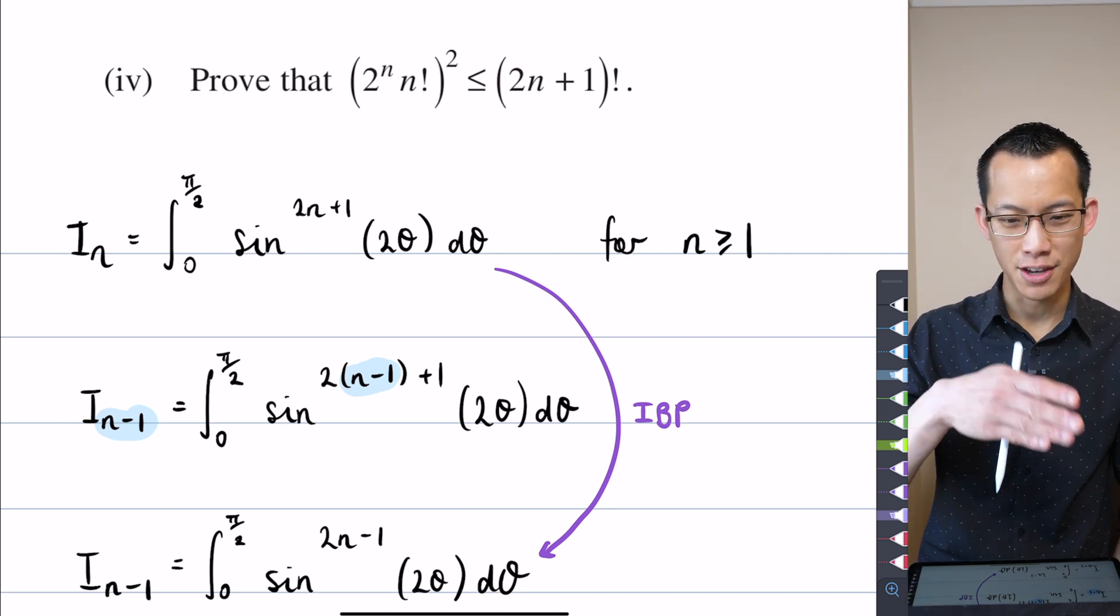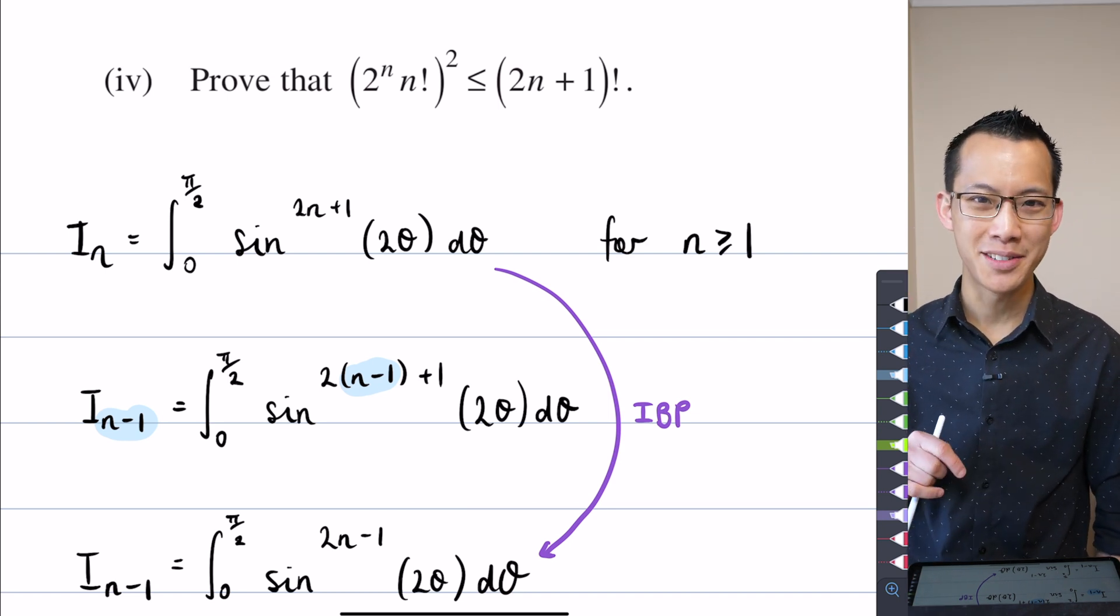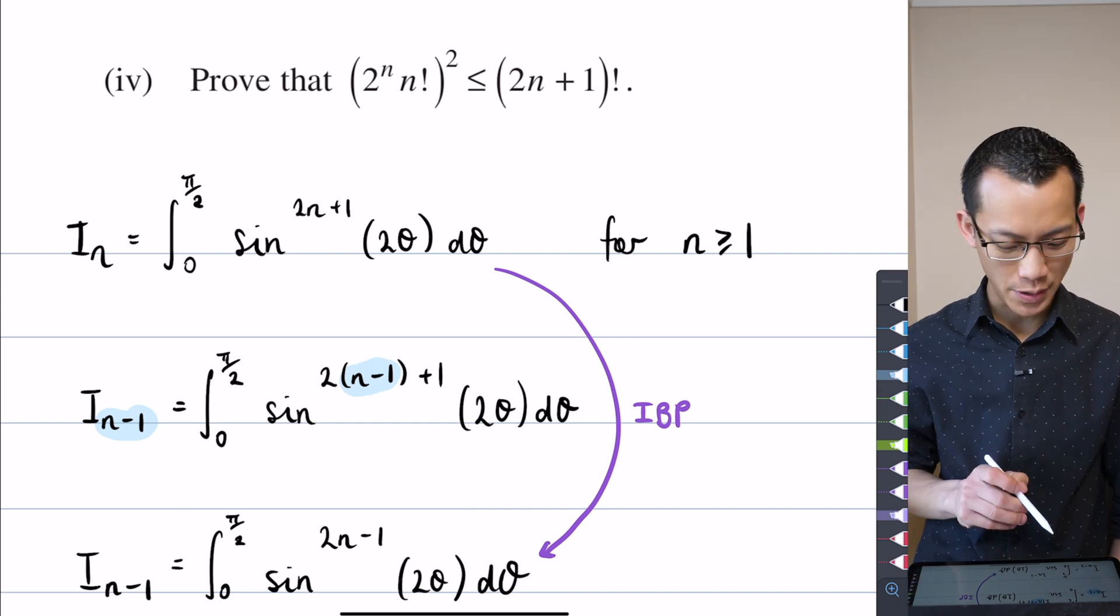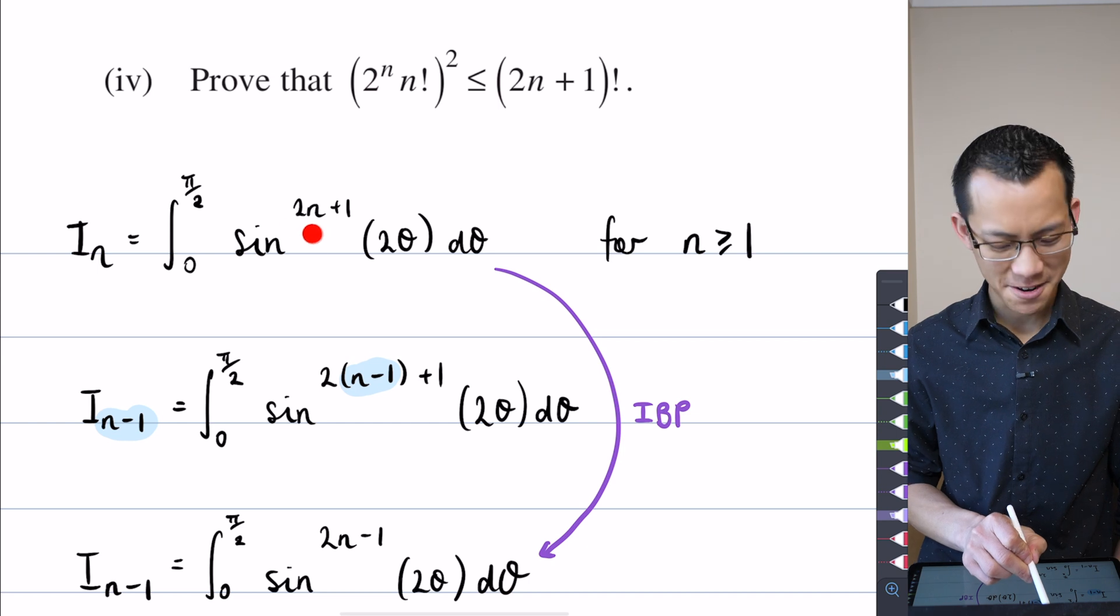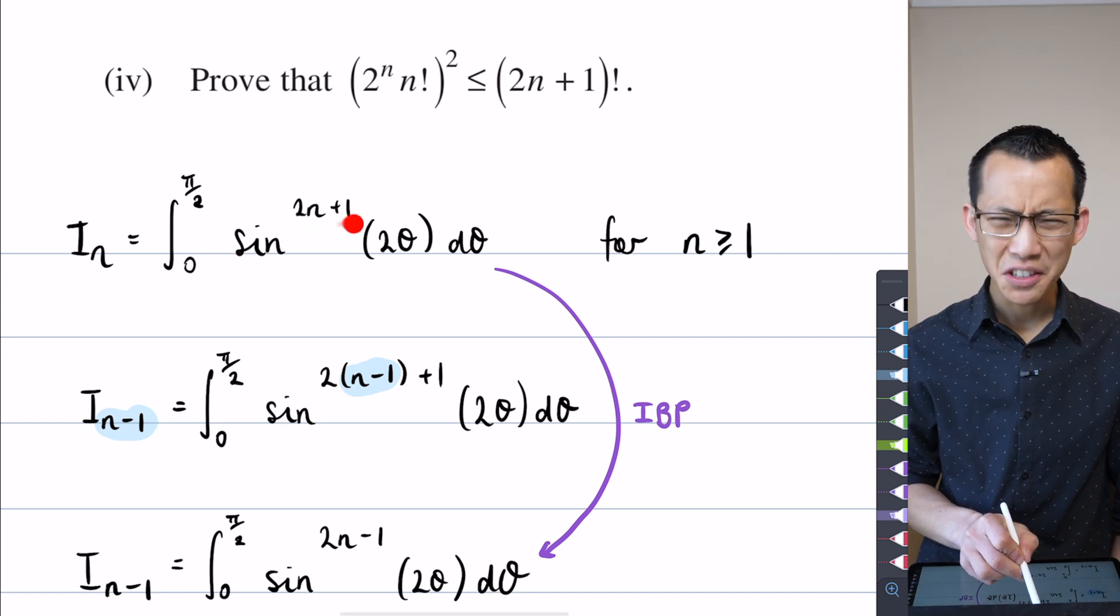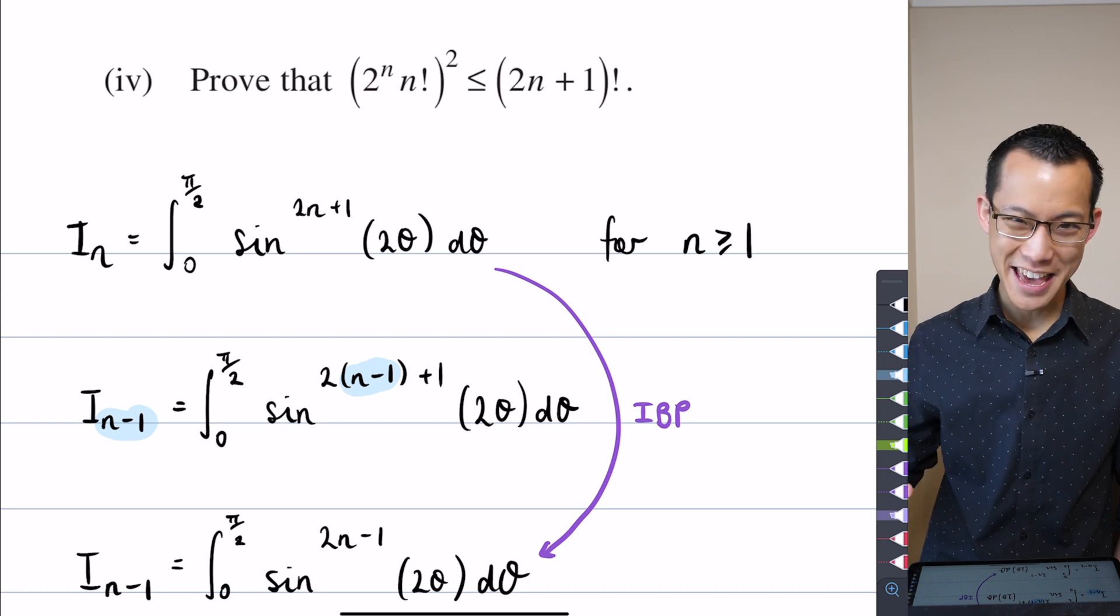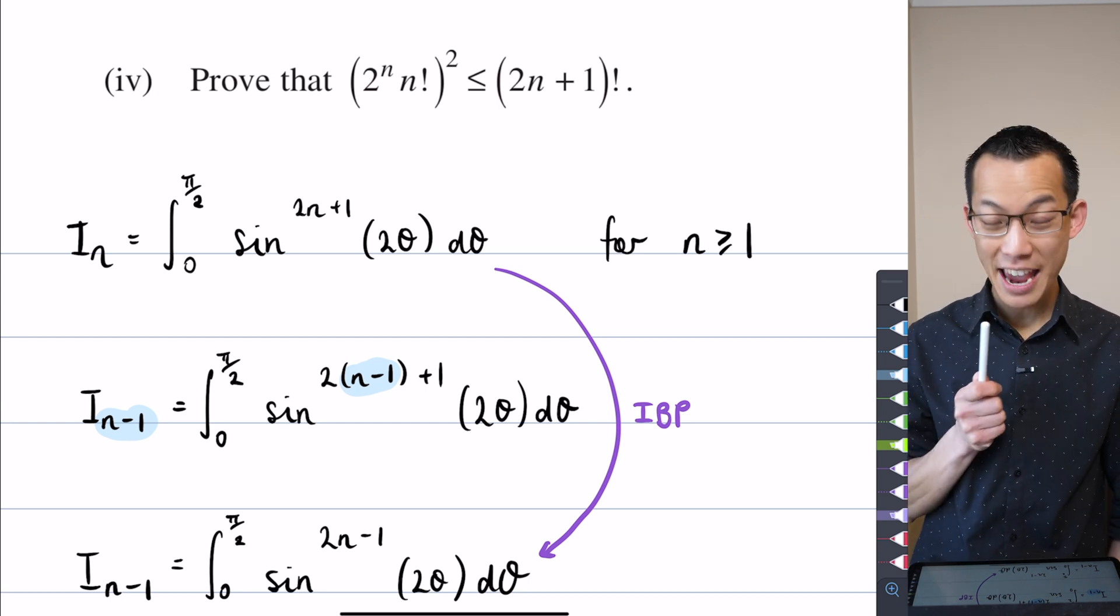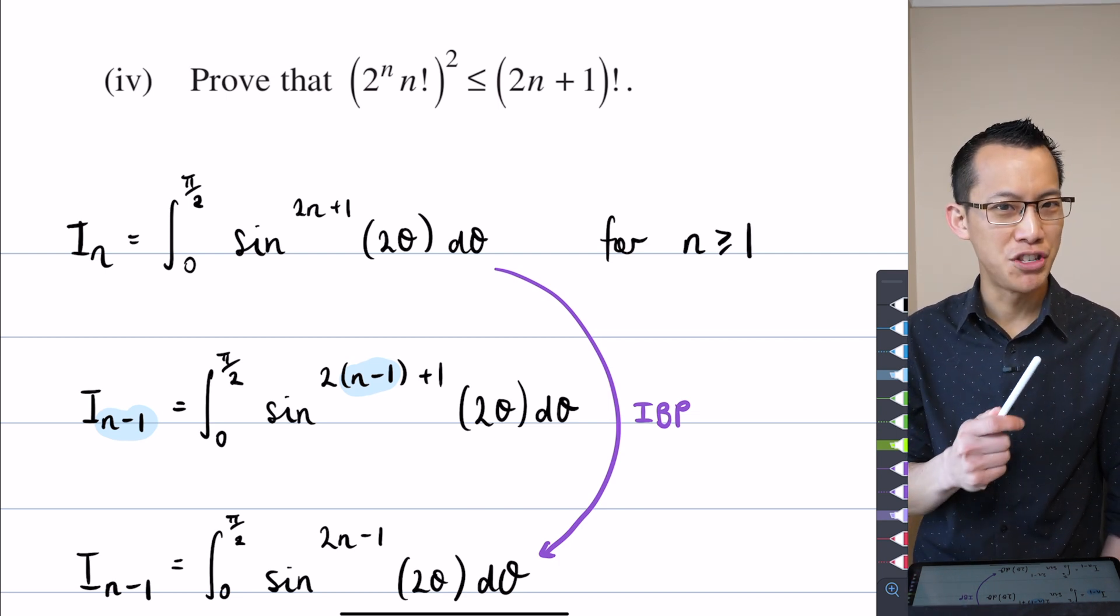A factorial ends at 1. Like the last term is like times 3 times 2 times 1, so n equals 1 is not a bad thought. Often recurrence relations, once you get to n equals 1, you can evaluate. But when you look at it, very quickly, when you put n equals 1 into here, what do you get? Sin cubed of 2 theta d theta? No thanks. So therefore, even though I can't work out i1 in a second, I think I'm going to need to go one more step after that, which is 0.